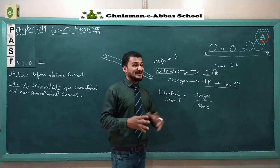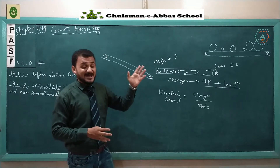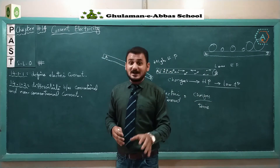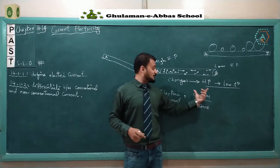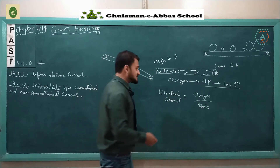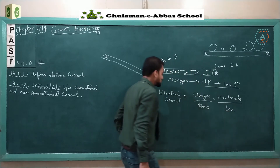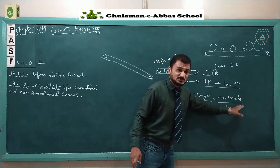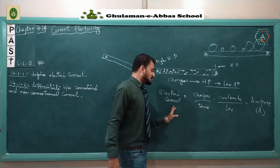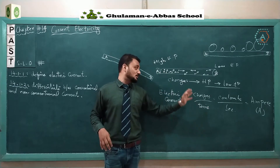Before the connection of the battery, the charges are randomly moving. When we connect the battery, all the charges move in the direction of the electric field, and this constitutes an electric current. So we define electric current as the flow of charge in a unit time. Charge is measured in coulombs and time is measured in seconds. Therefore, the SI unit of electric current is coulombs per second, and coulombs per second is equal to ampere.